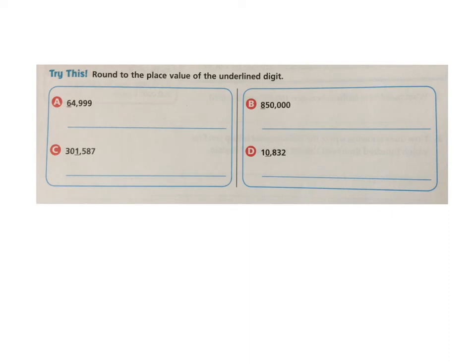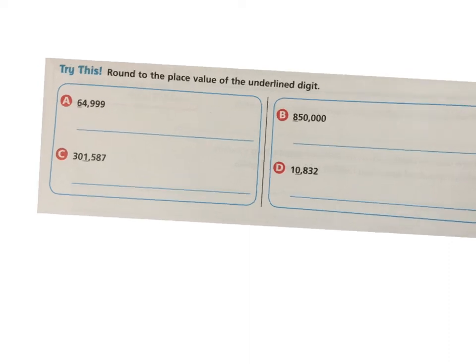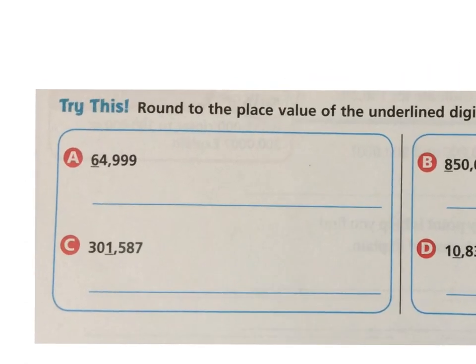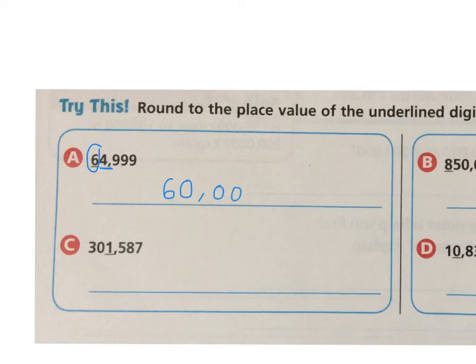Take some time now to solve these four questions. When you are rounding to a place, I want you to always circle the place value that you're rounding to — in this case the ten-thousands — and underline the place value to the right — in this case the thousands. Because 4 is less than the midway point of 5, this is going to round down, so it's closer to 60,000 than it is to 70,000. Pause the video right now; the answers will appear in just a couple seconds. Copying the answers is not going to help your math thinking, so pause it so that you can check your answers in a few minutes.